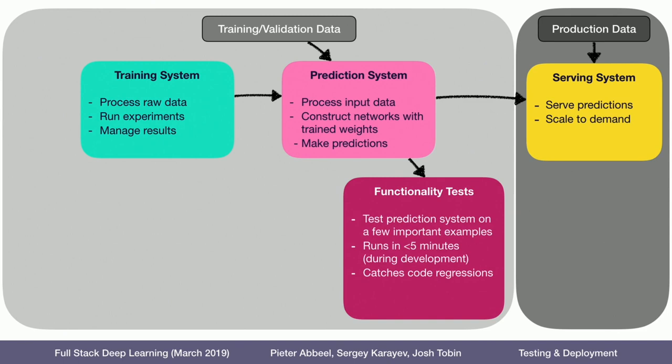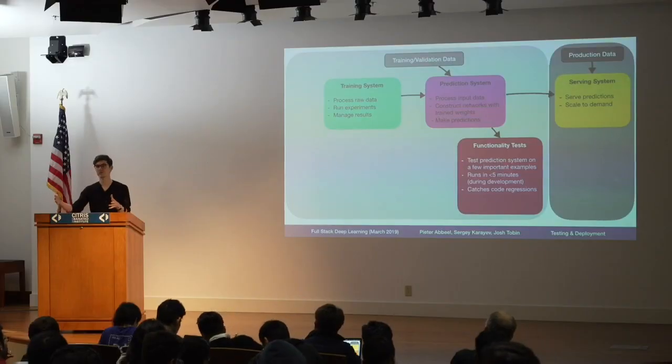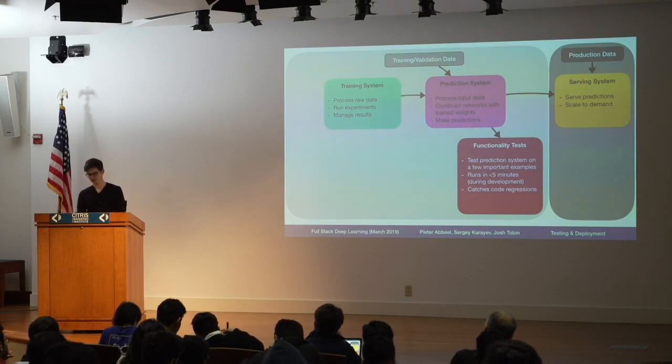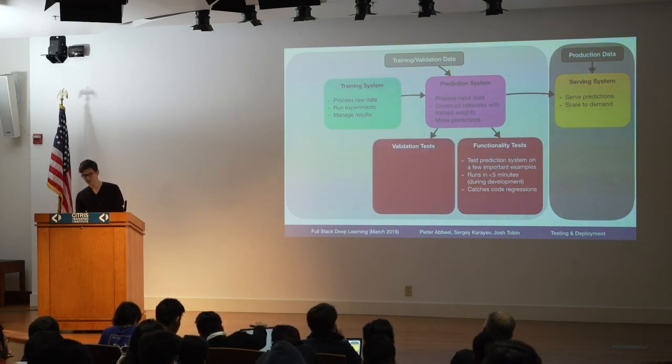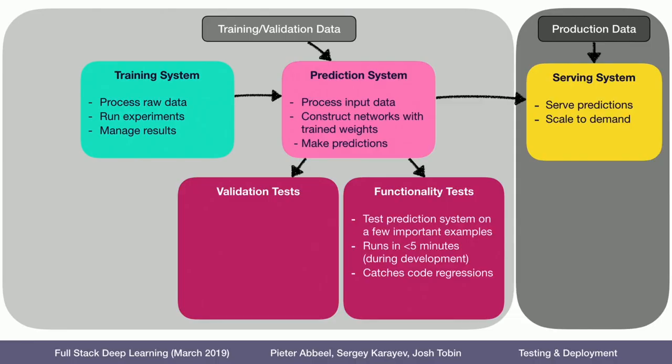Functionality tests are also useful when someone else is getting set up with the codebase — if they can run the prediction test, they have at least some kind of baseline. Then there are also validation tests, where the goal is to test the prediction system on a validation set. So it's trained on the training set and we care about performance on the validation set.